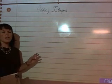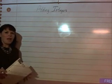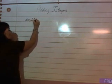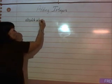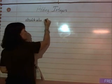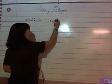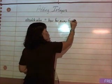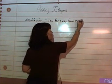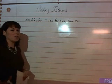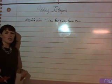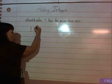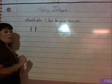One thing you need to understand about adding integers is you need to understand your absolute value. Absolute value means how far away from zero. How far away is it from zero? And here's how you would show absolute value. It's with two straight lines.